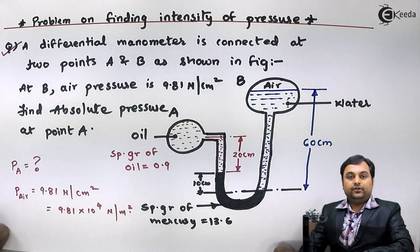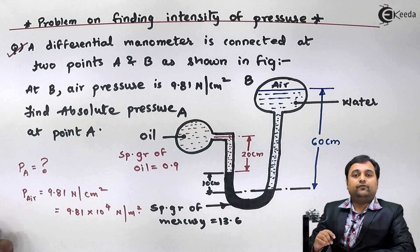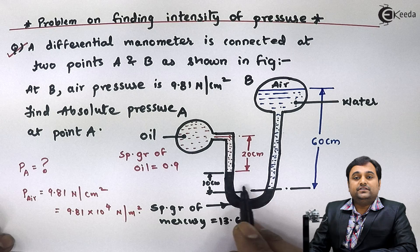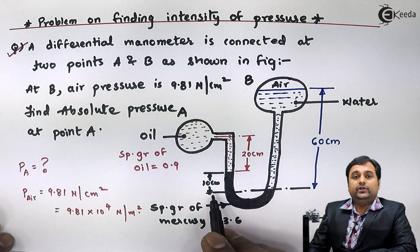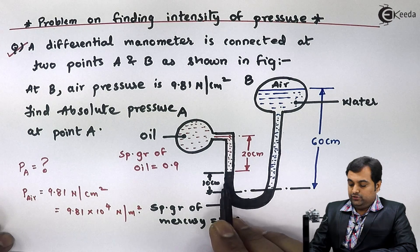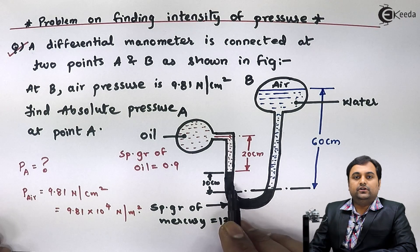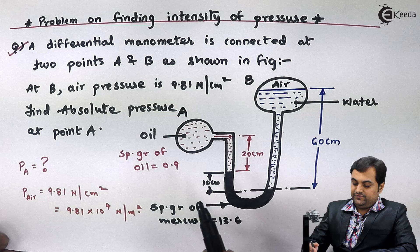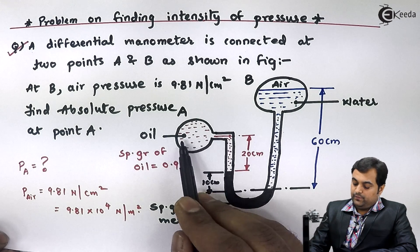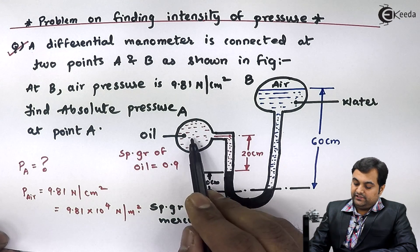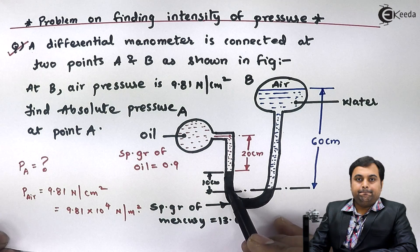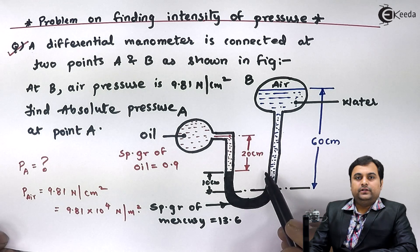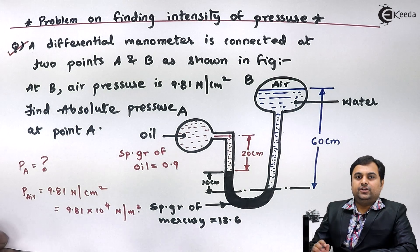For a differential U-tube manometer, we have to balance both sides — that is, equate the left limb and the right limb. This gives us the pressure equation.